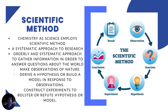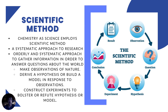The scientific method. Chemistry as a science involves the scientific method as a systematic approach to research — an orderly and systematic approach to gather information in order to answer questions about the world. This includes making observations about nature, deriving hypotheses or building a model in response to observations, and constructing experiments to bolster or refute hypotheses or models.